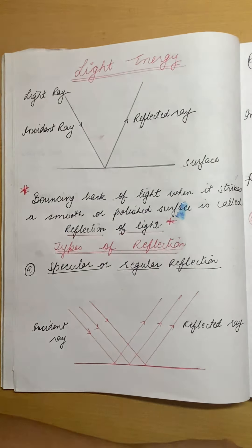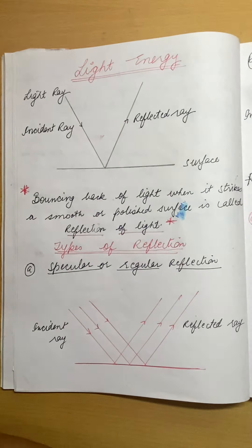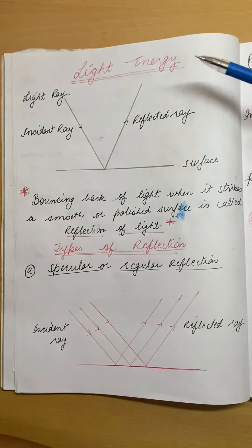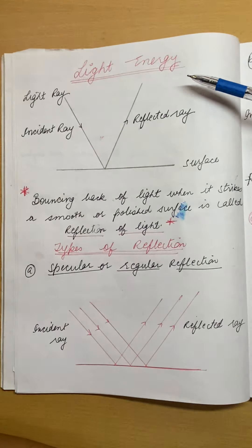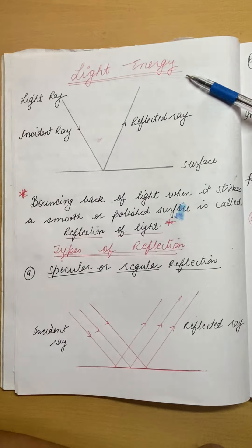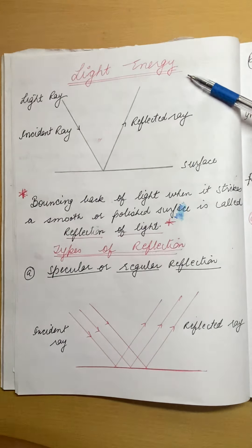Good evening everyone, hope you all are doing good. This is your physics class. Today we are starting chapter number 4 of physics, that is light energy. Now you must have heard about energy — energy is the capacity to do work and we can convert one form of energy into another form of energy.